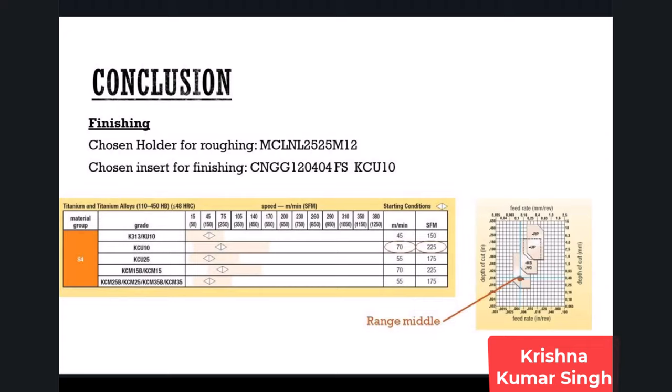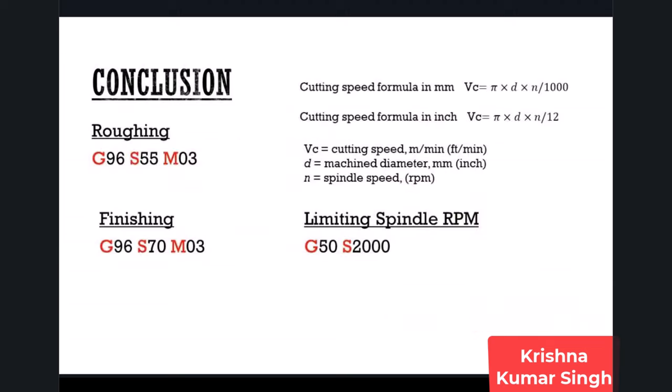For both roughing and finishing operations, we will program constant surface cutting speed in the CNC program. G96 means the cutting speed is constant, followed by the cutting speed value. In our case, roughing cutting speed is 55 meters per minute and finishing is 70 meters per minute. The spindle will rotate in a clockwise direction.